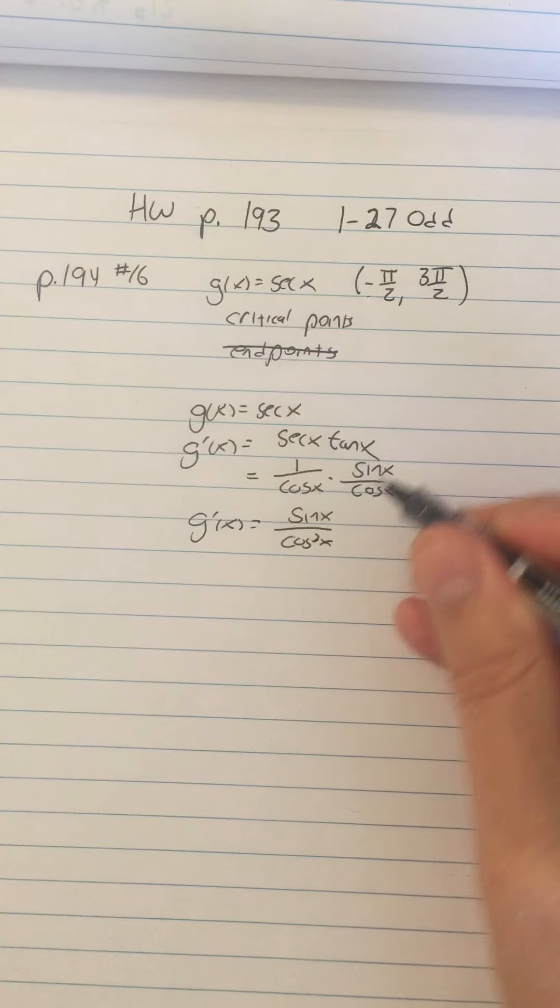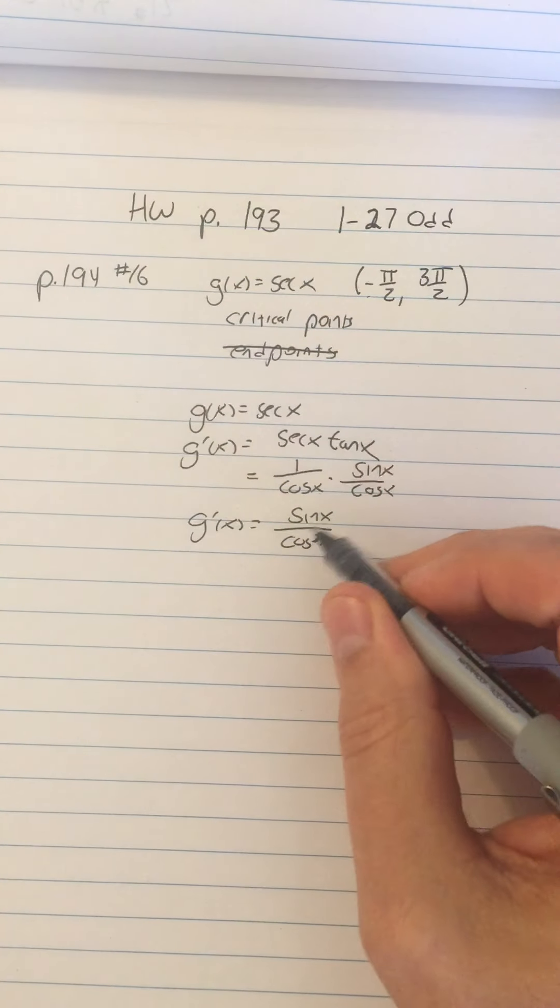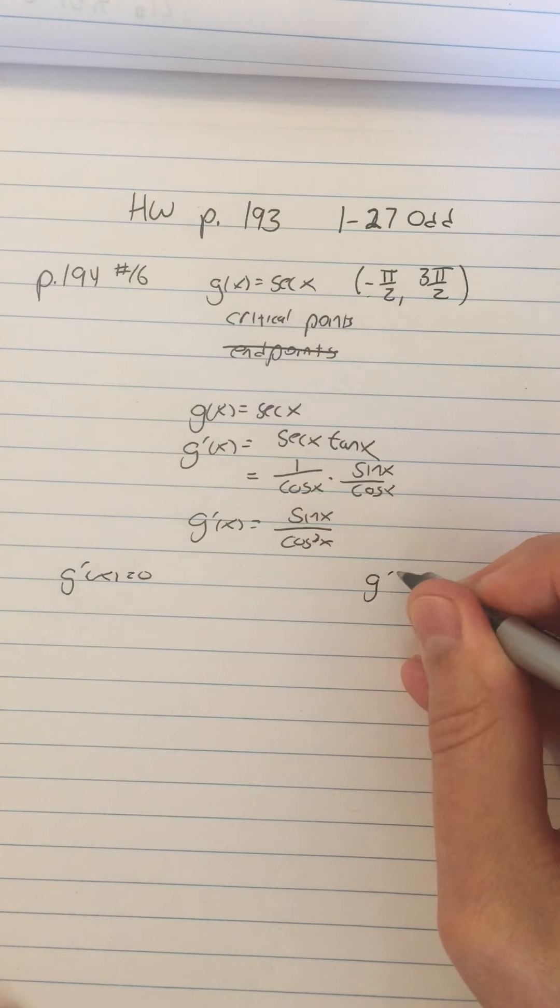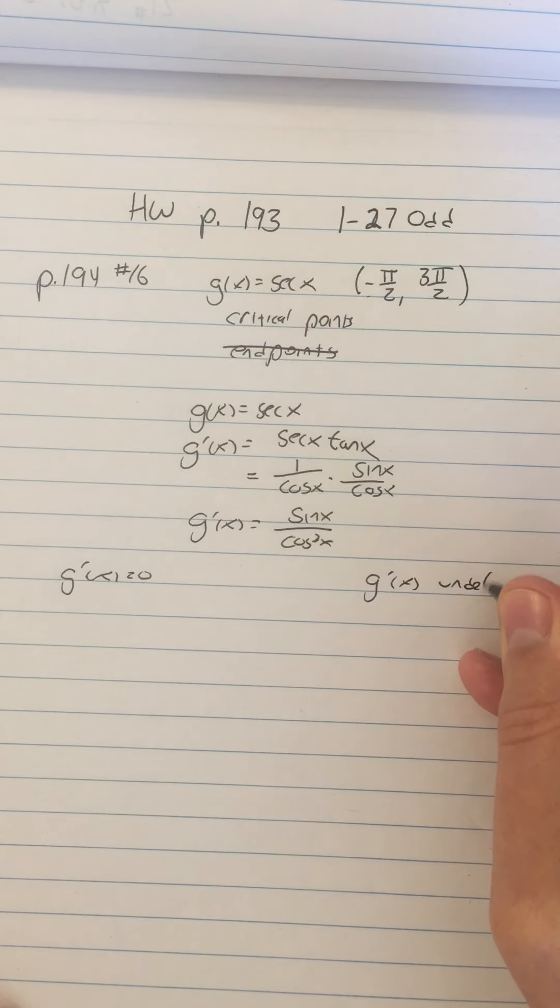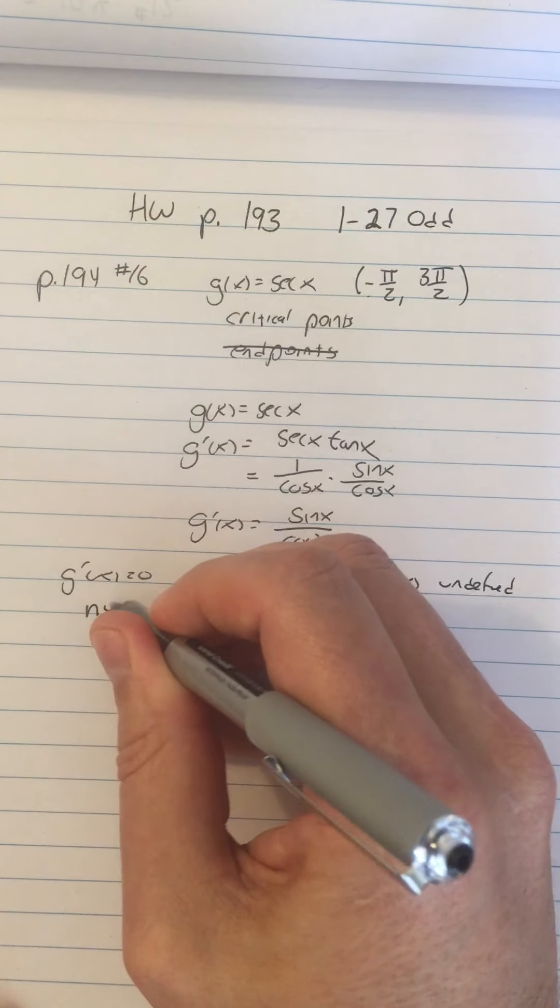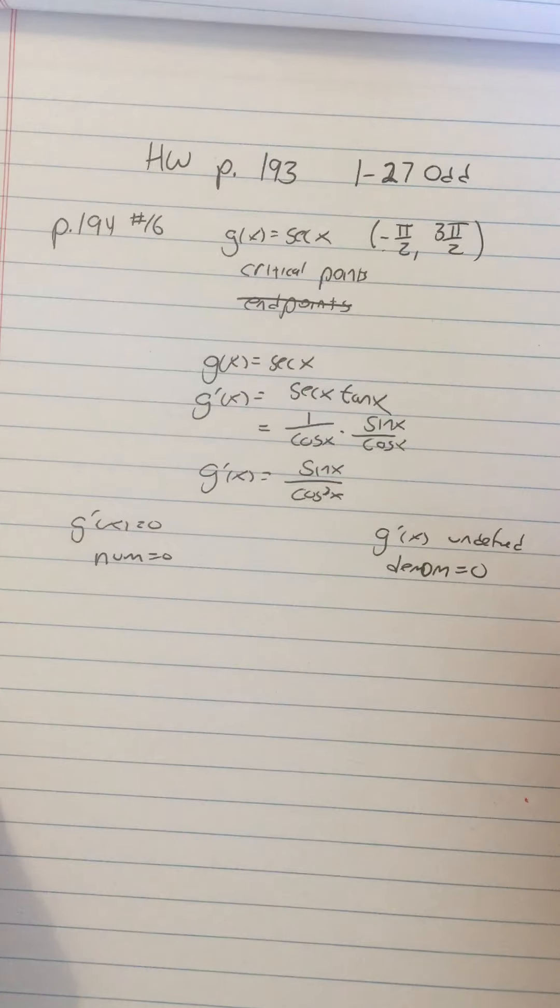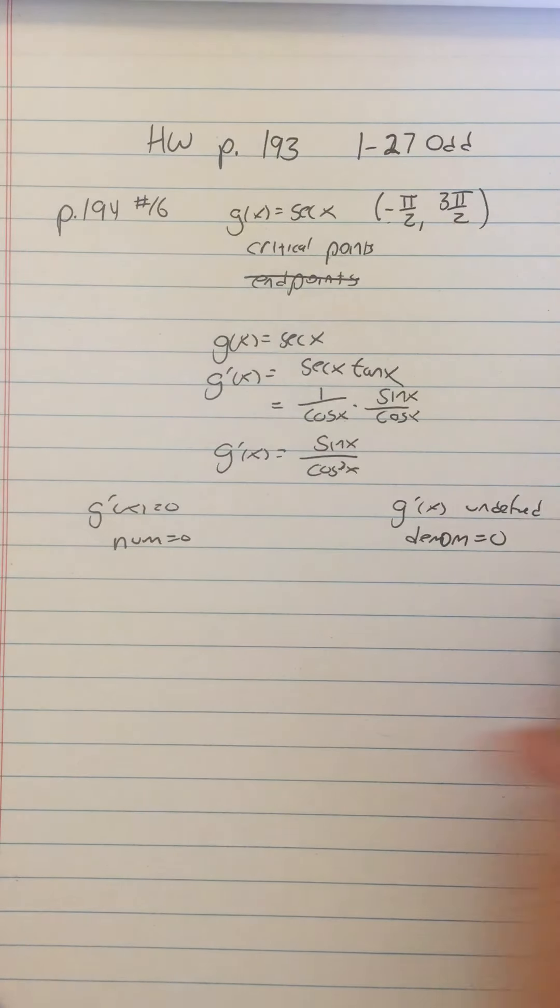I just wrote it how you can rewrite things. By rewriting it this way, now I can find where g prime of x equals zero and where g prime of x is undefined by just setting the numerator equal to zero and the denominator equal to zero.